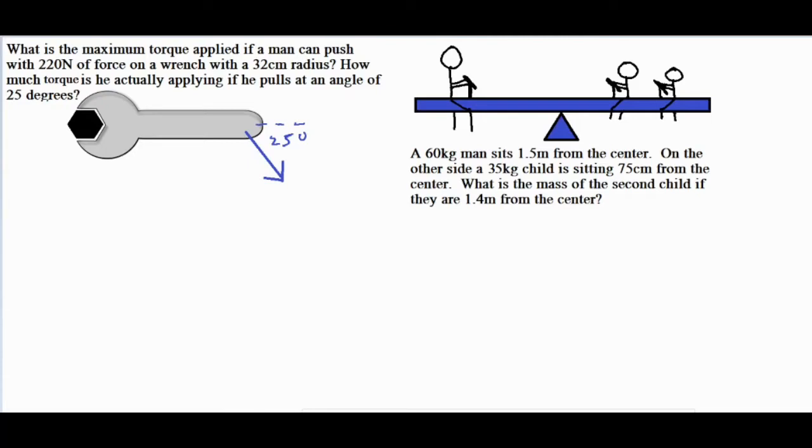So the torque formula is force times r, which is the radius or lever arm, times the sine of theta. Now the greatest value you can get from the sine of theta is a sine of 90 degrees, pulling or pushing perfectly perpendicular to that radius.